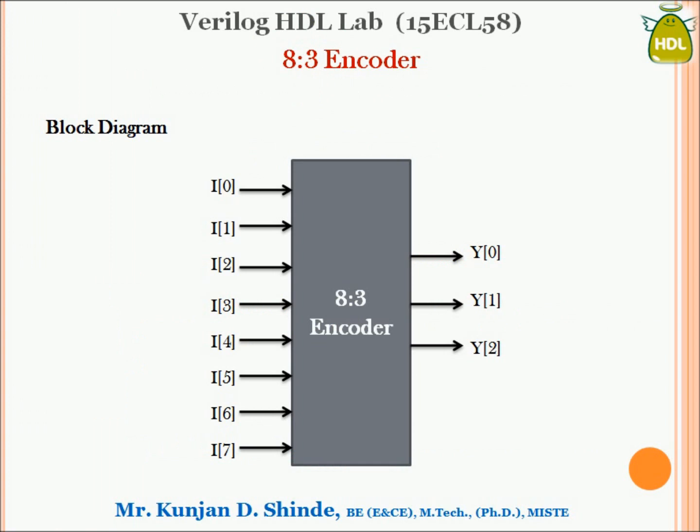An encoder is a combinational logic circuit which has 2-power-n inputs and n outputs. This circuit encodes long-length information into smaller-length information. As an example, we have 8 inputs encoded into 3 outputs. This circuit is also known as 1-hot code, which means one of the inputs is high at a given point in time, and the rest of the inputs are 0.